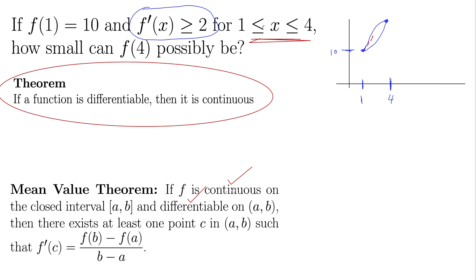Let's look at the conclusion of the mean value theorem down here, f(b) minus f(a) over b minus a. In the context of this particular example, our a is 1 and our b is 4. So we have f of b minus f of a all over b minus a, so that's really f(4) minus f(1) all over 4 minus 1.